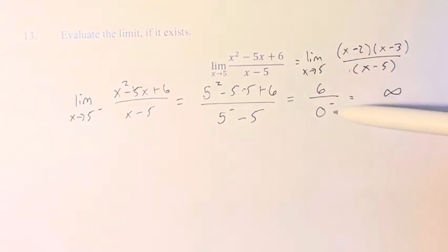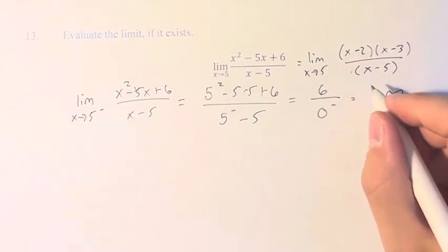And if this was approaching 1, it wouldn't matter. But if we are approaching 0, then it matters whether it's positive or negative because this is a positive number divided by a negative number, which makes this negative infinity.